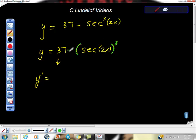So we have 3 times negative 1 is negative 3. Secant of 2x, so we don't do anything to the inside piece here, do we?